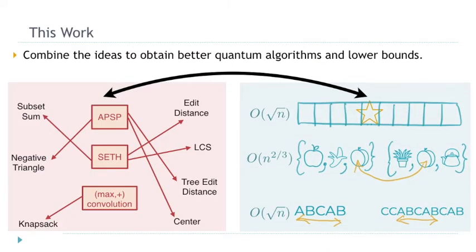What we had in mind for the project is the following: we wanted to merge these two areas. We wanted to use the techniques of fine-grained complexity, but instead of treating existing classical algorithms as black boxes, we replaced them with existing quantum algorithms. So everything is going to be classical reasoning, but in the end the algorithms we obtain are quantum — because the algorithms we start with as black boxes are quantum algorithms. This way, we can derive better and better quantum algorithms for these problems.